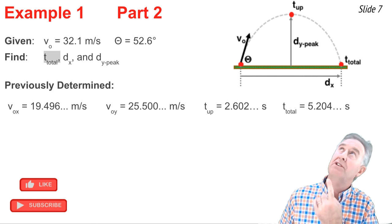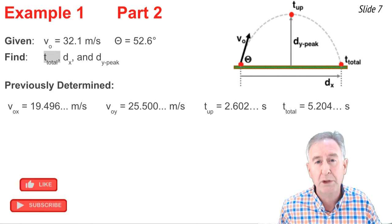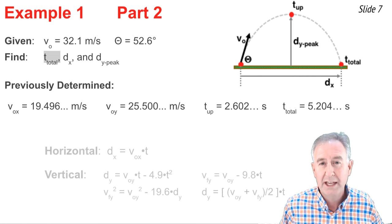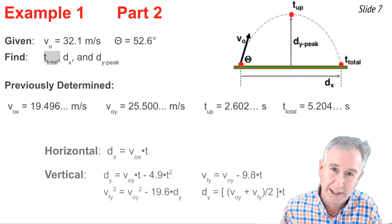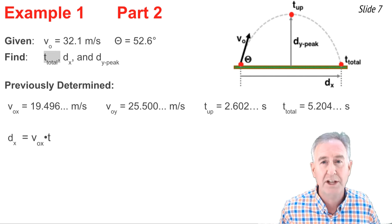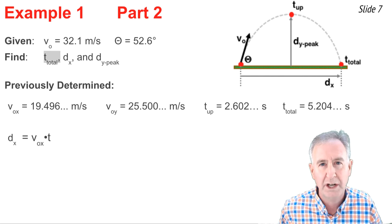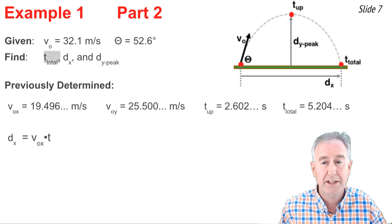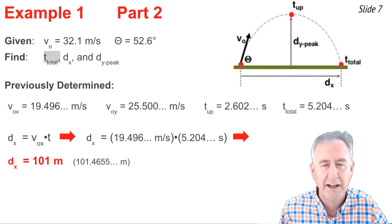Now I need to find dx and dy at the peak. Starting with dx: referring to the diagram, we want horizontal displacement at the total time of 5.204 seconds. There's only one horizontal formula to choose from: dx equals VOx times t. VOx was already calculated as 19.496 meters per second. Multiplying by the total time of 5.204 seconds gives approximately 101.46 meters.